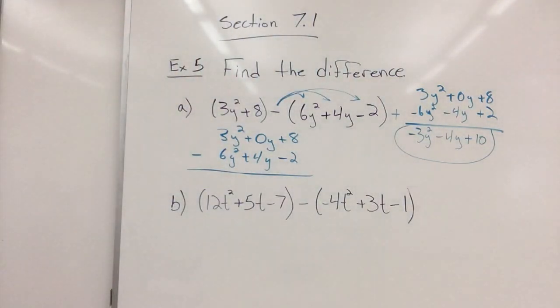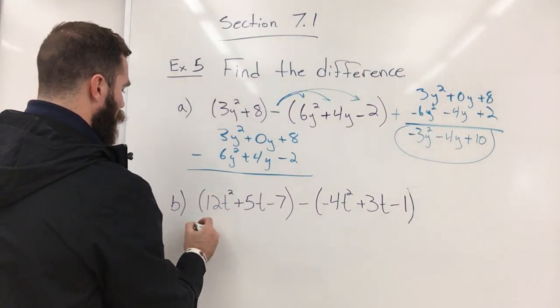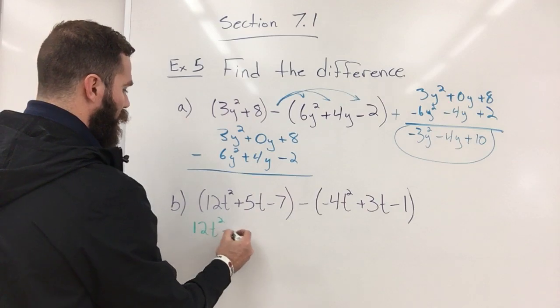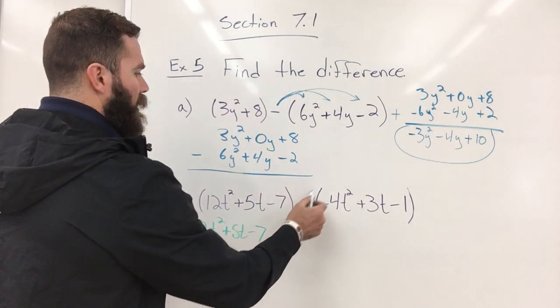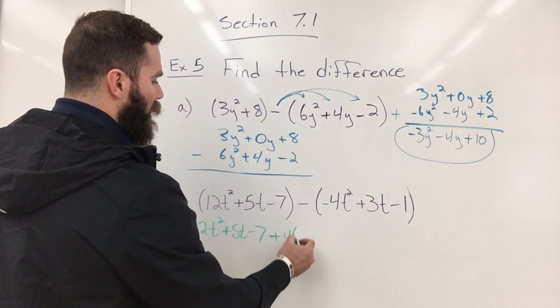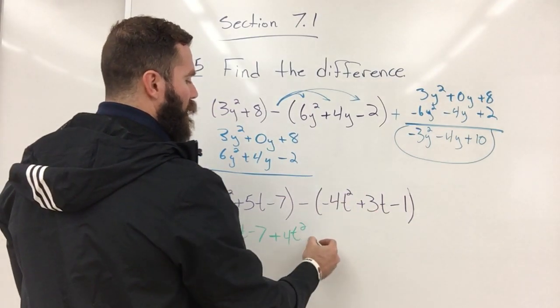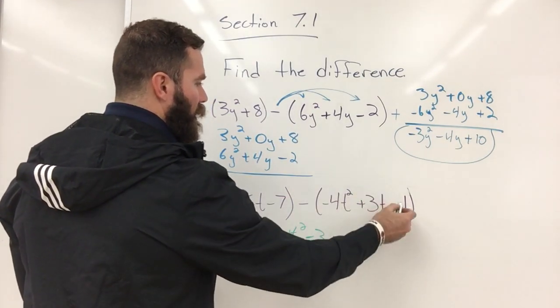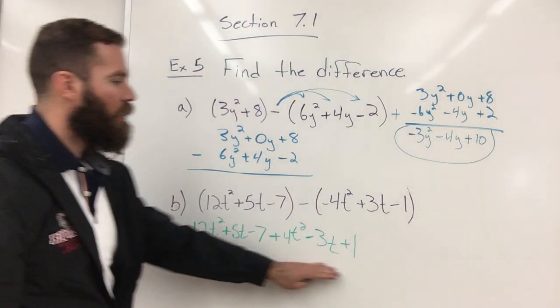Now the next example, we'll do this one in horizontal. So again, I'll just start out with the first trinomial here. It's already in standard form. Minus a negative 4t is positive 4t. Negative positive makes a negative 3t. Negative negative is a positive 1. So it's written out horizontally.